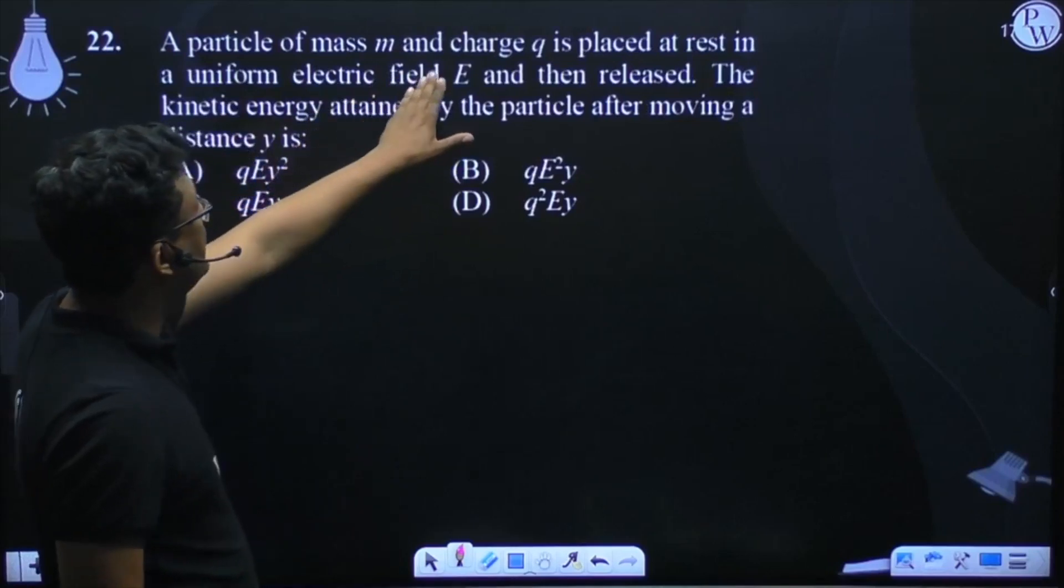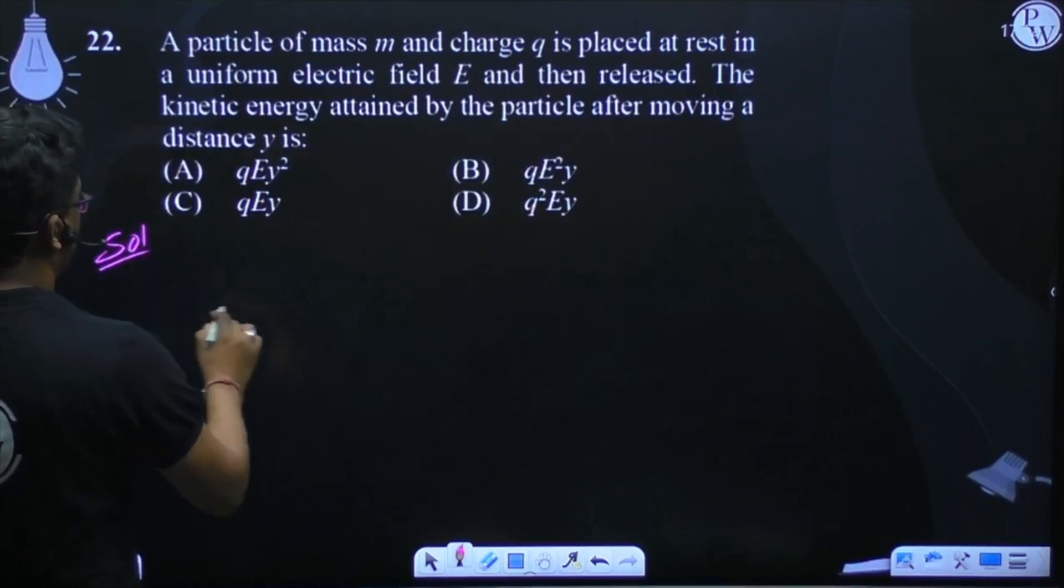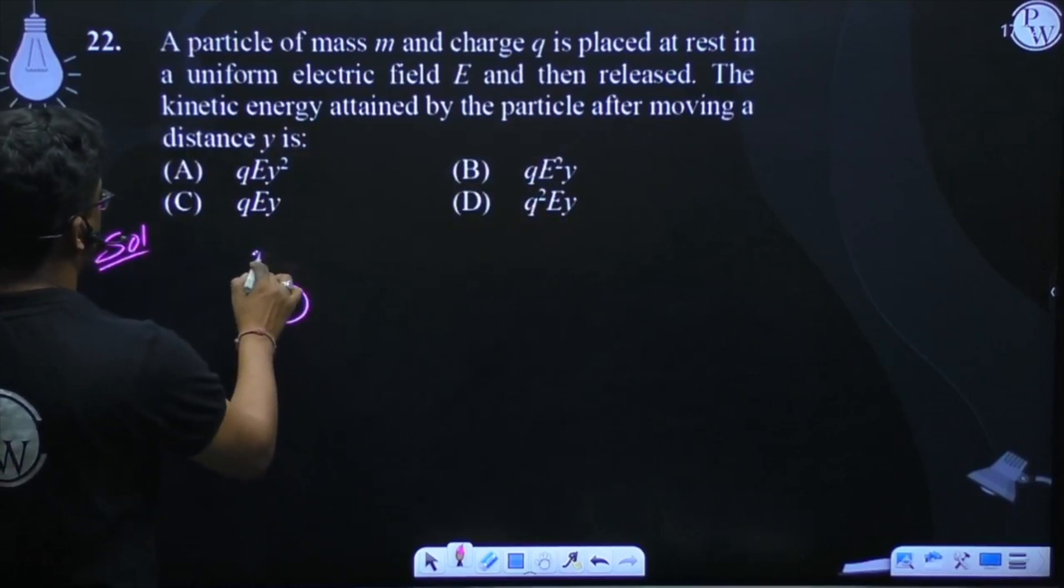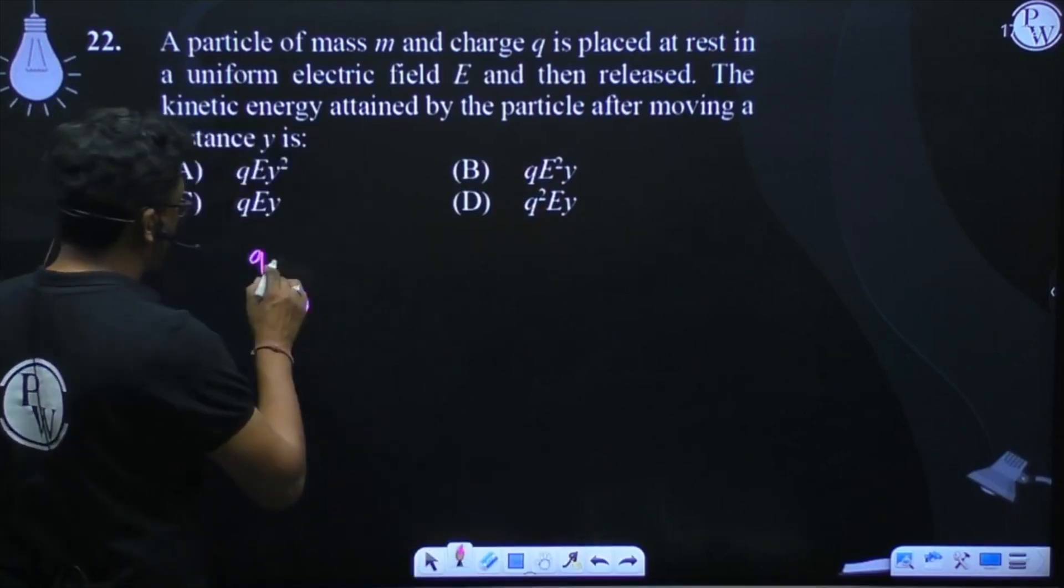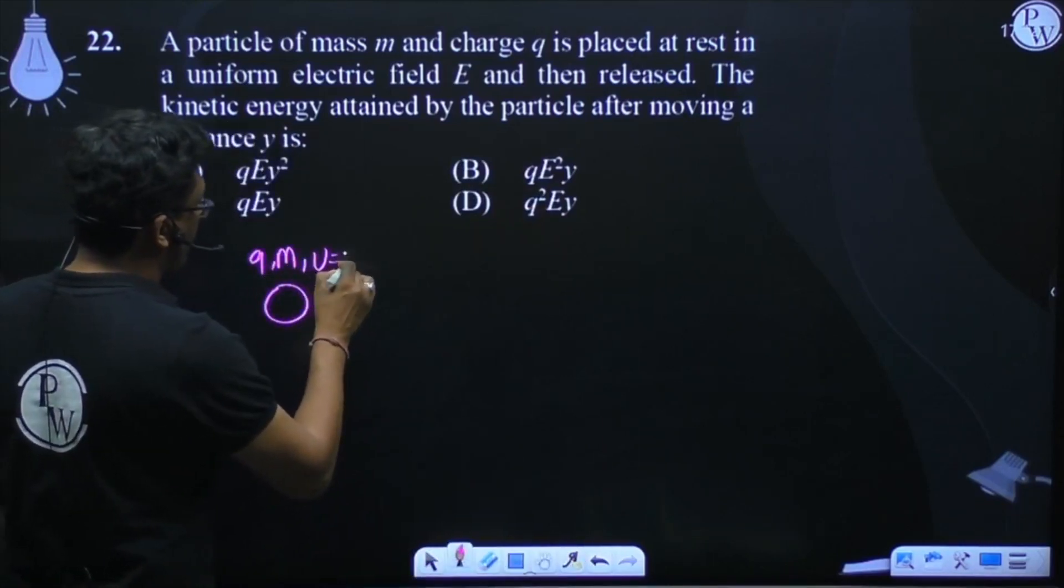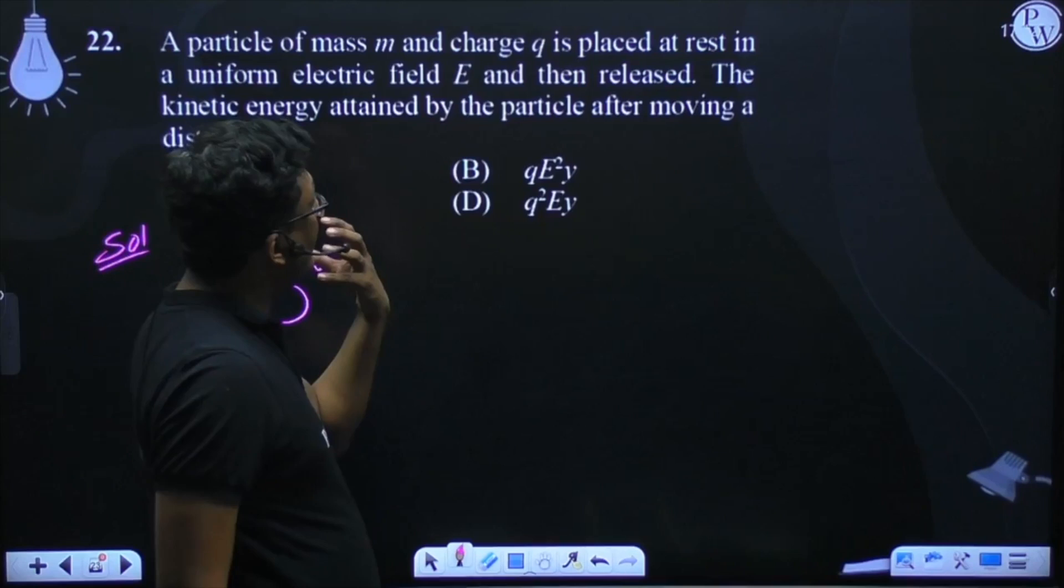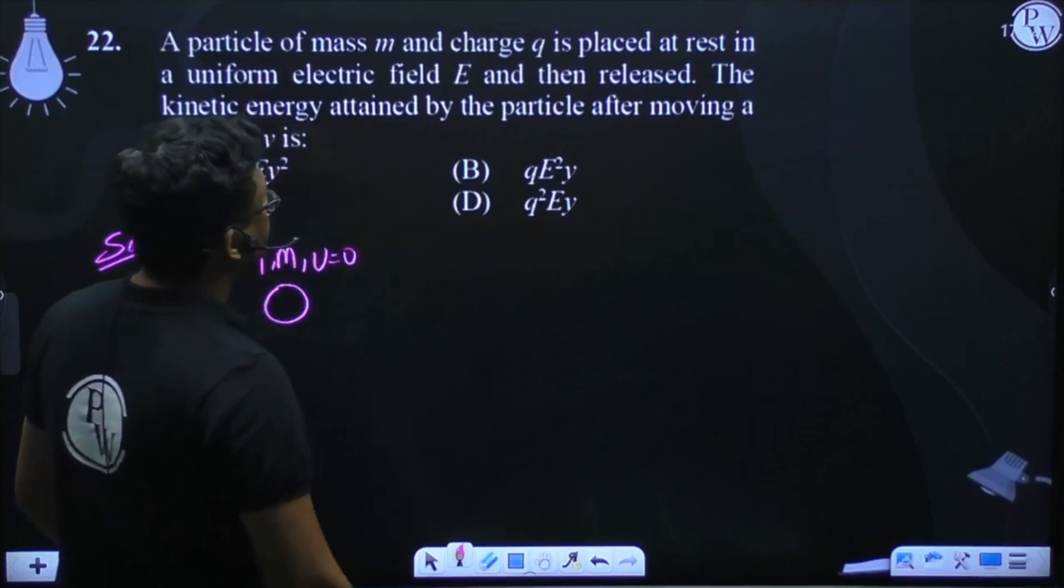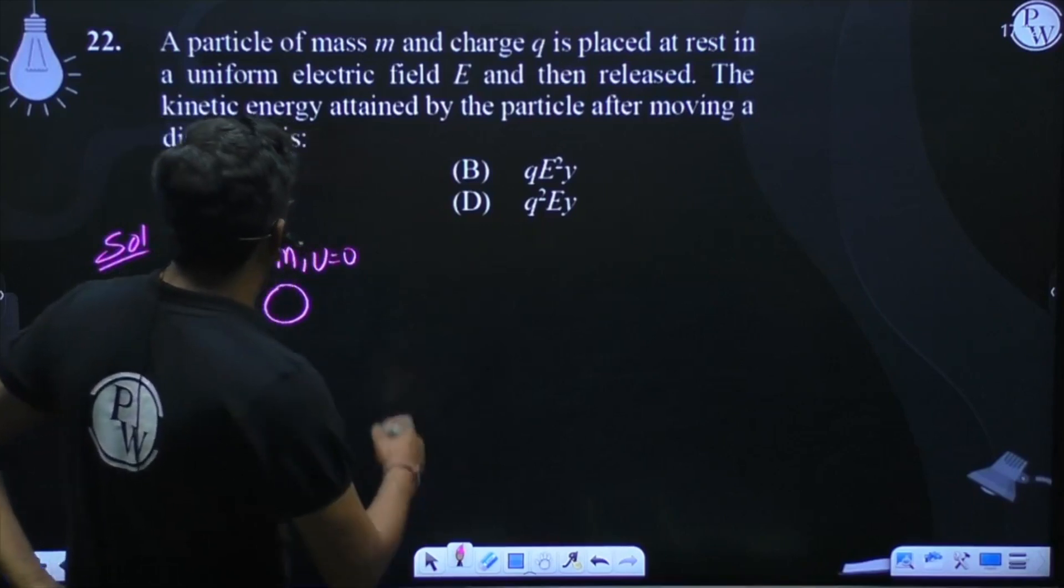A particle of mass M and charge Q is placed at rest in a uniform electric field E and then released. The kinetic energy attained by the particle after moving a distance Y is: